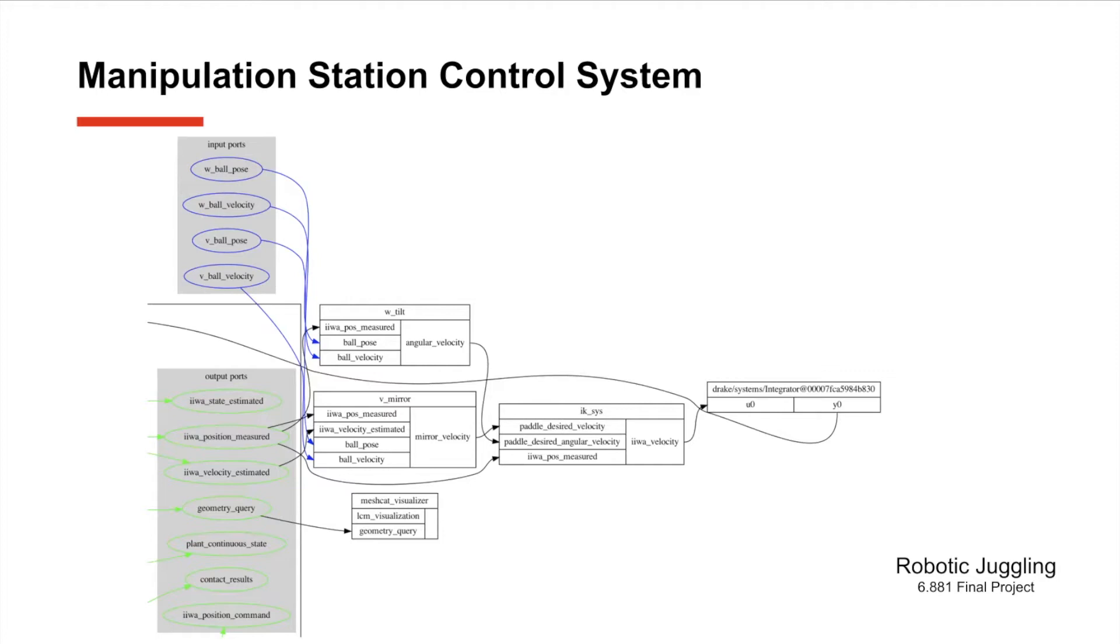Note that we are assuming that we have these exact values. We are taking them from the simulation data and not getting them through a perception system. The ball pose, ball velocity, and the different states of the Iwa arm are passed into these two systems which essentially take the ball velocity, ball pose, and the state of the arm to determine our desired translational and angular velocity of our paddle end effector. These are then passed into our differential inverse kinematic system to convert the desired paddle velocity into angular velocities of the robot joints and then these are passed into an integrator to get joint angles which are then looped back to close the system into the commanded robot arm Iwa position.